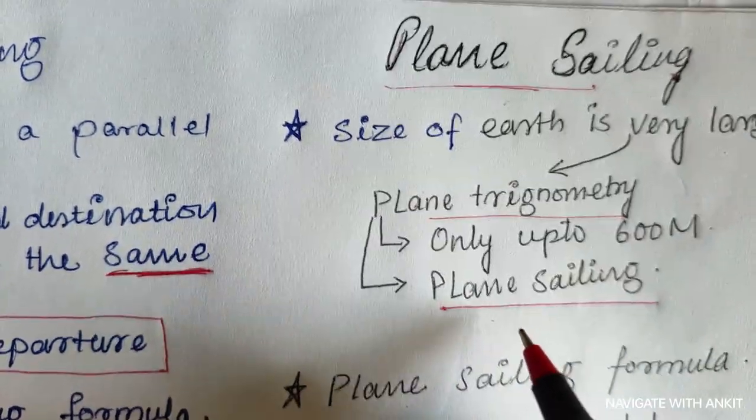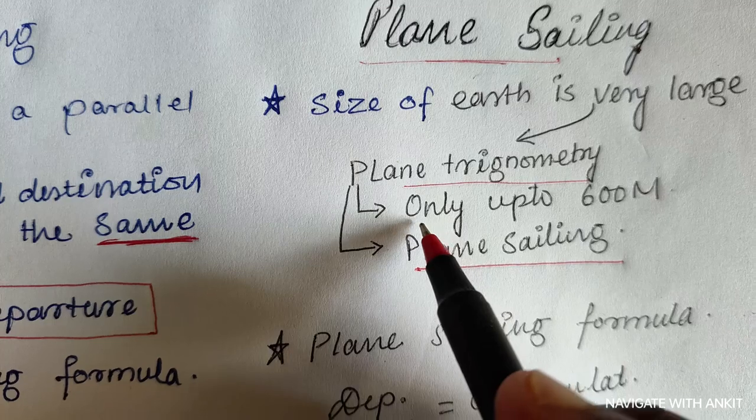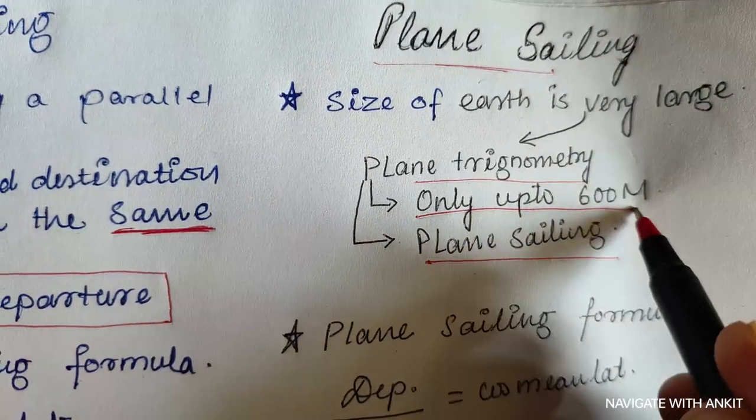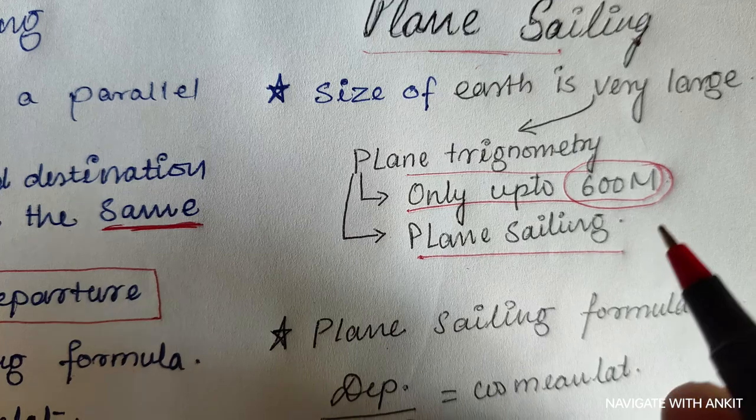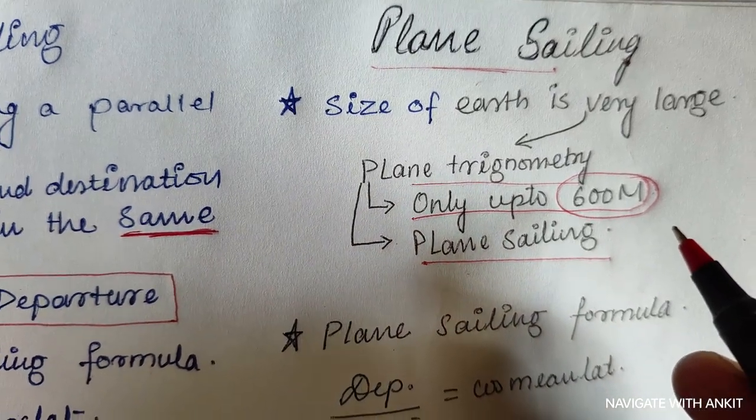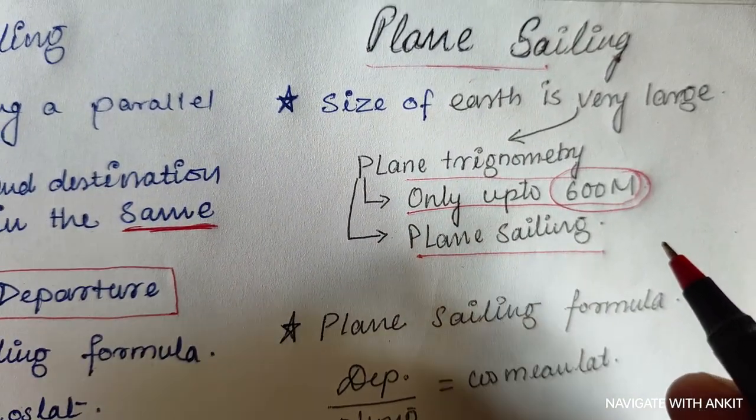It has only one limitation that we can only use up to 600 nautical miles. If we use it beyond 600 nautical miles, then due to the curvature of the earth there may be errors.